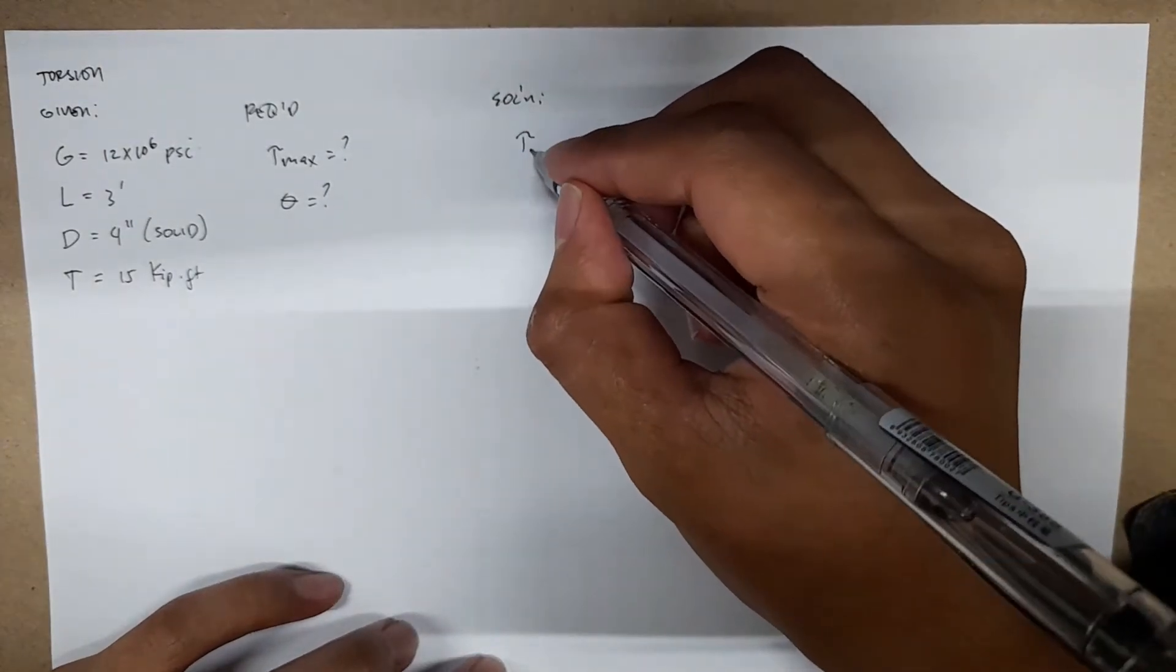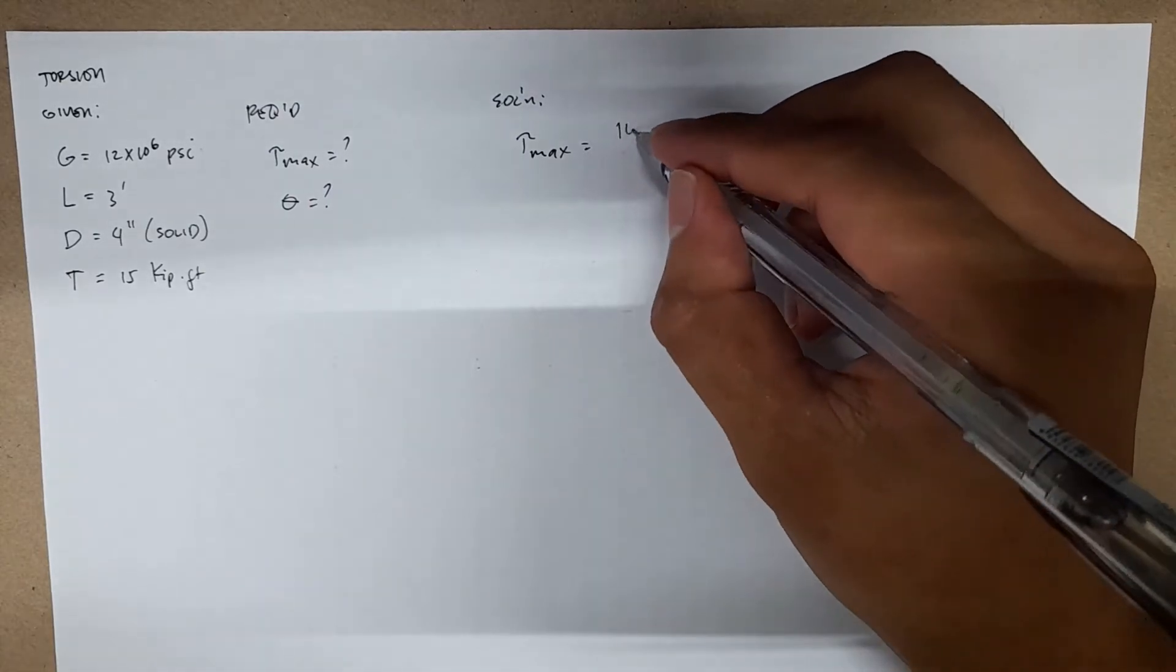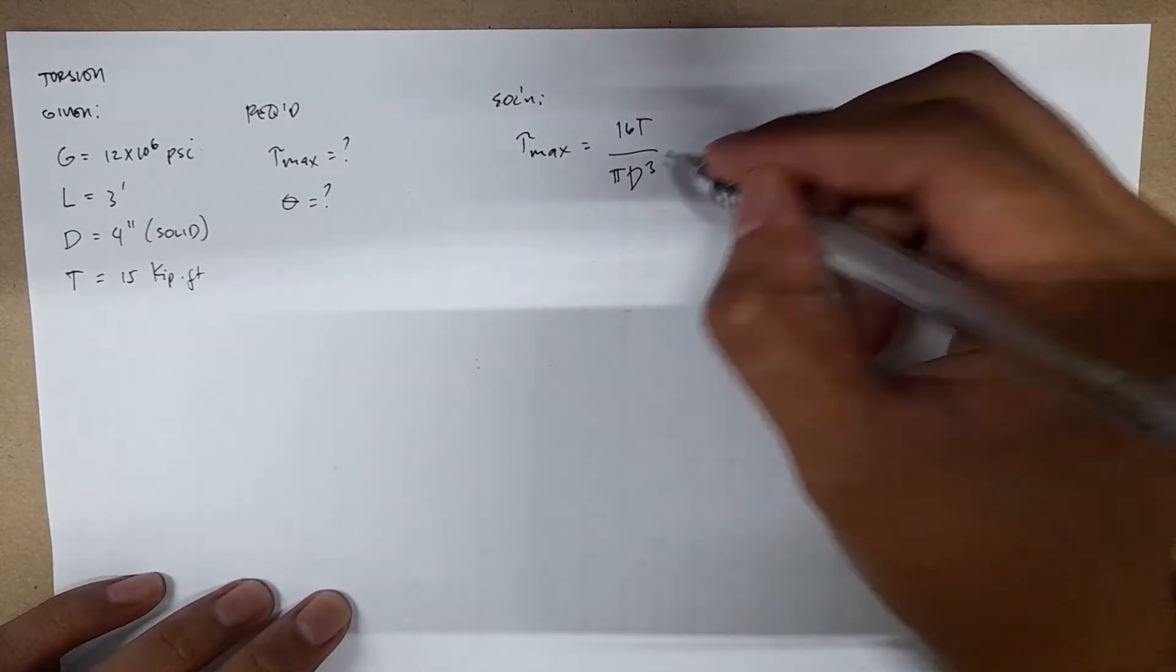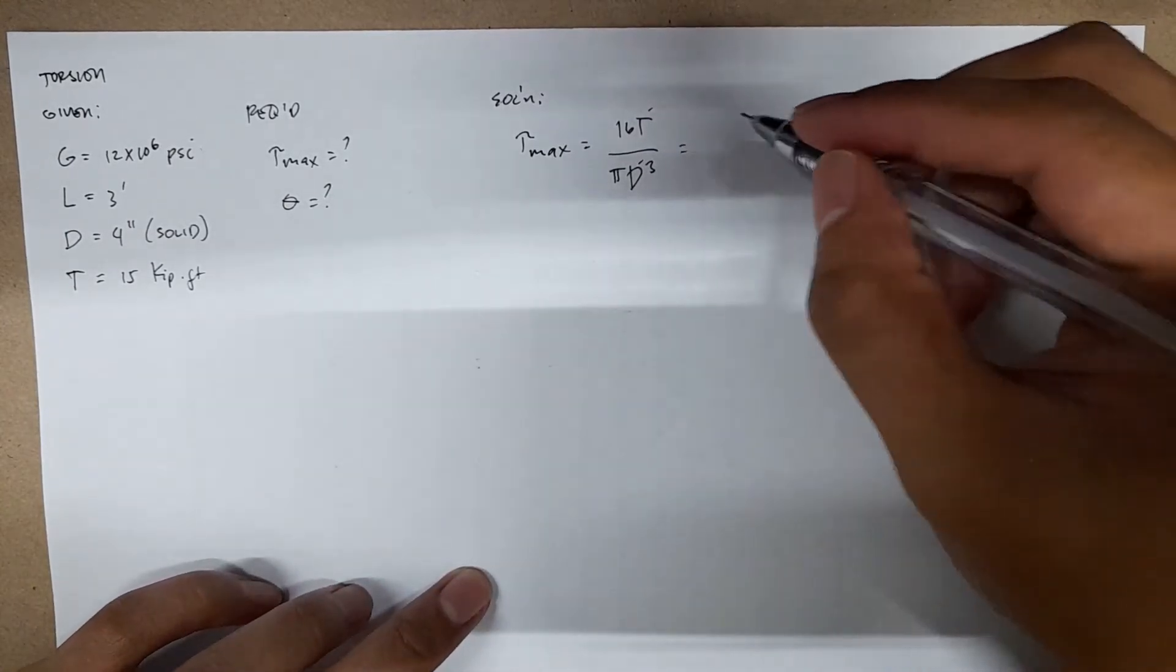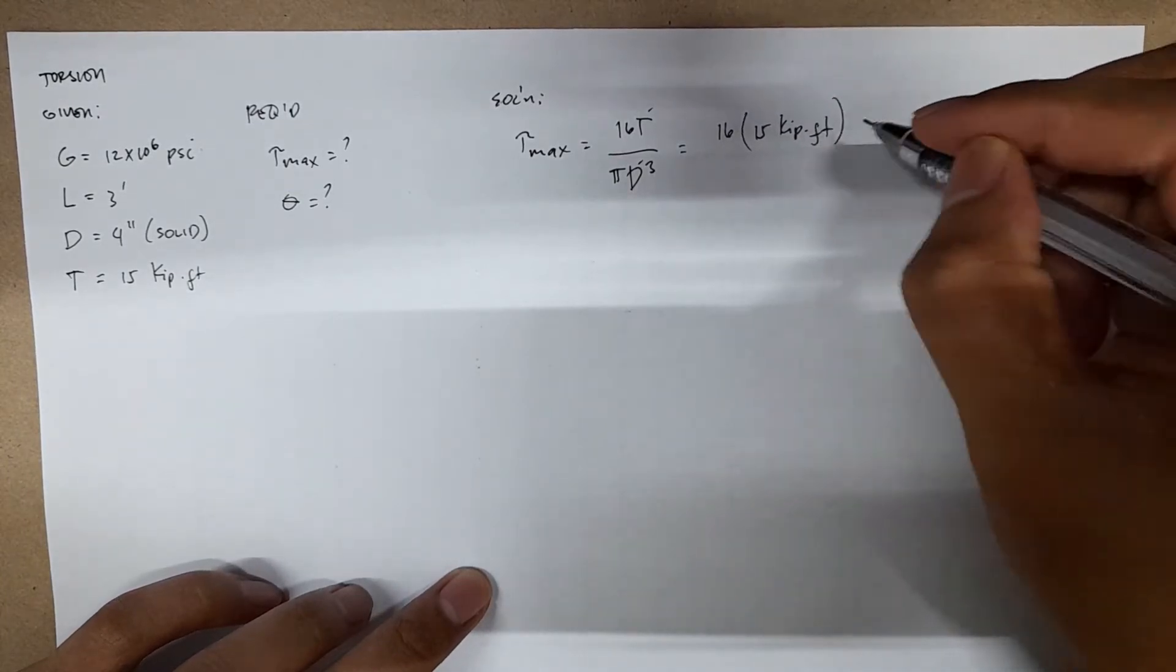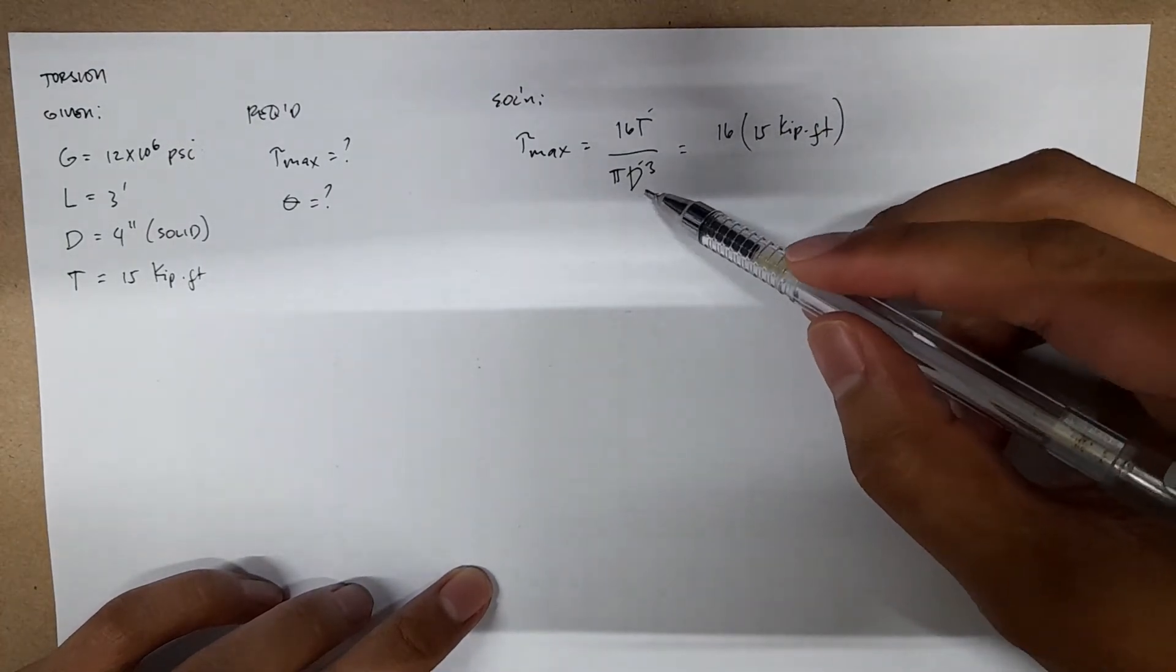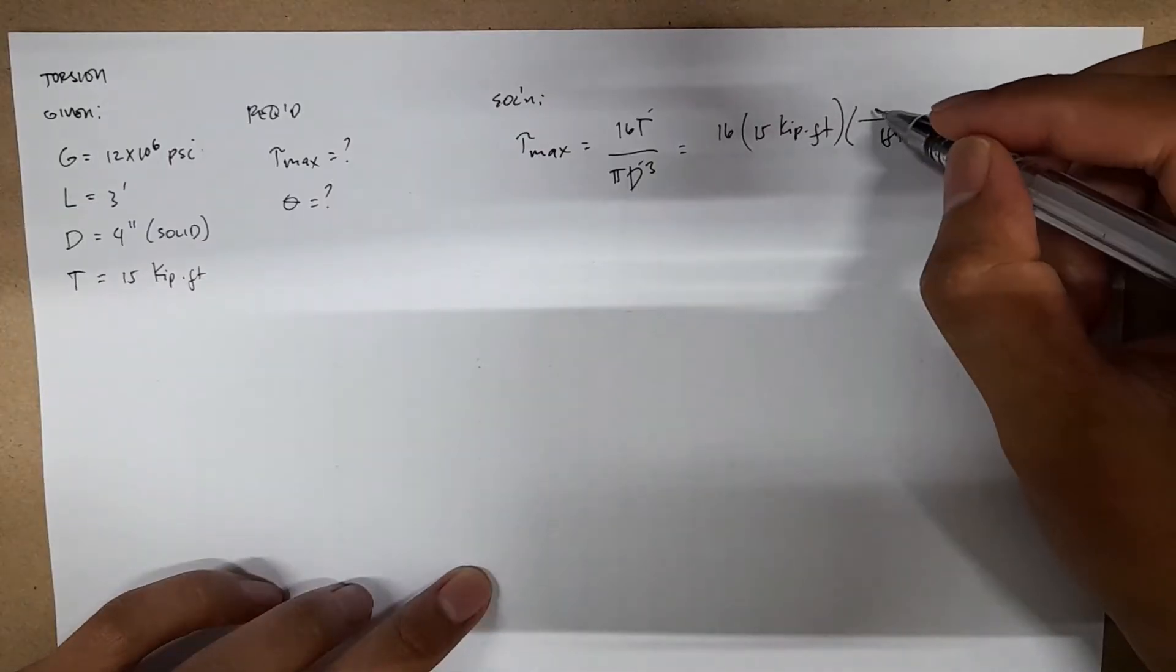Shear max is equal to 16T divided by πD³. We're given torque and diameter, so we can evaluate this. 16 times 15 kip-foot—we need to convert feet because our diameter is given in inches. We have 1 foot equals 12 inches.